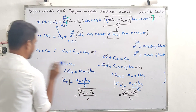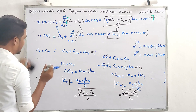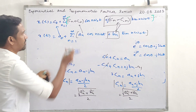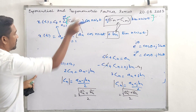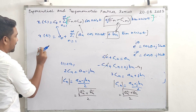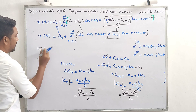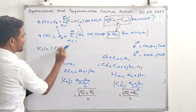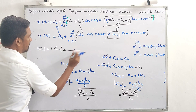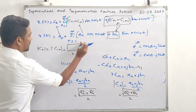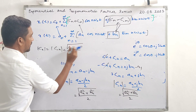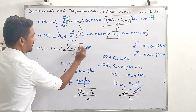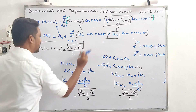So it will be proved that the magnitude of c_n equals the magnitude of c of minus-n, and both equal under-root of (a_n squared plus b_n squared) divided by 2. This is the relationship between exponential Fourier coefficients and trigonometric Fourier coefficients that was to be established.